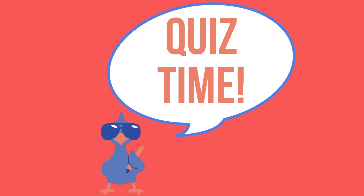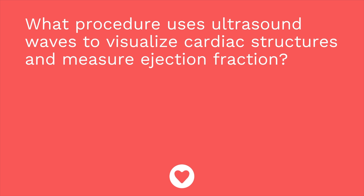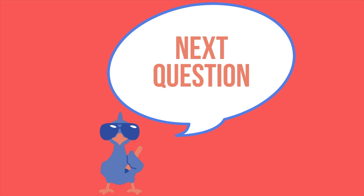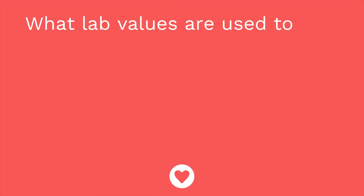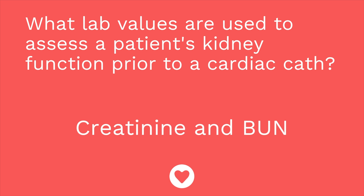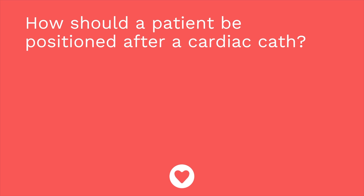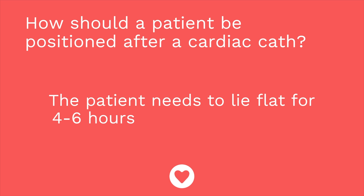Time for a quiz — three questions. First: what procedure uses ultrasound waves to visualize cardiac structures and measure ejection fraction? Answer: an echocardiogram. Second: what lab values assess kidney function prior to a cardiac cath? Answer: creatinine and BUN, with creatinine being the more important of the two. Third: how should a patient be positioned after a cardiac cath? Answer: they need to lay flat for four to six hours after the procedure.